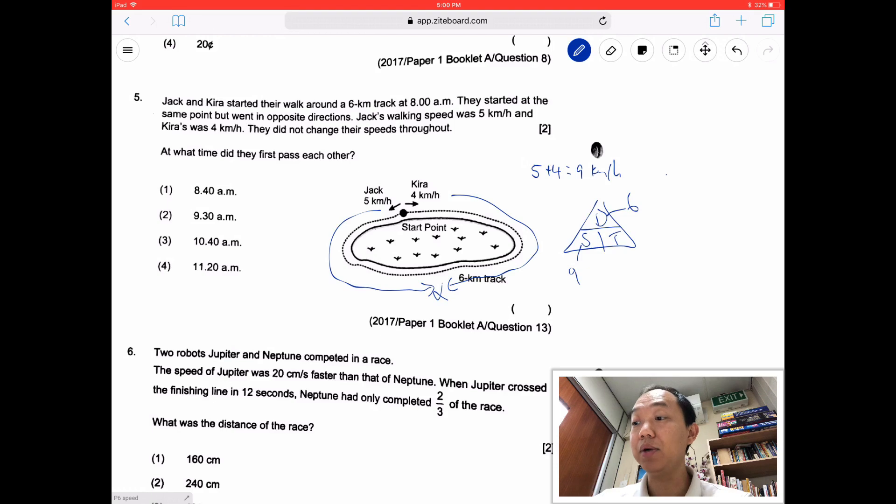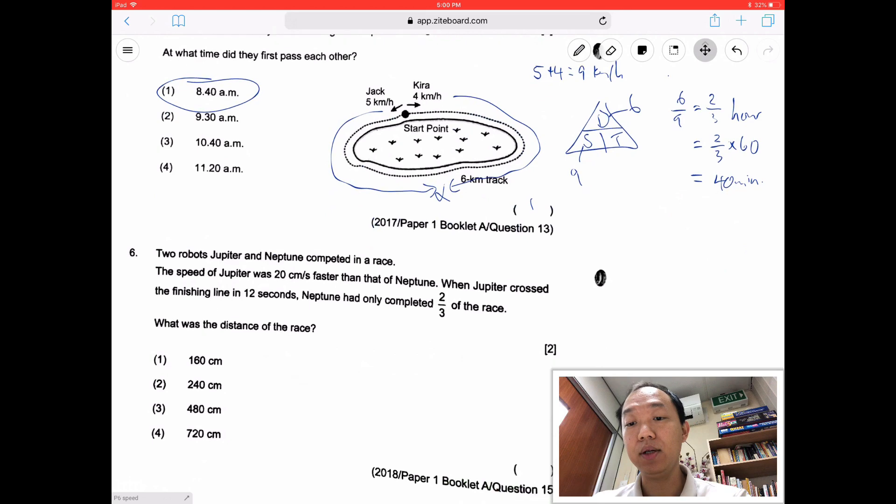So using the DST triangle, distance is 6, speed is 9, I want to find the time. So how do I find the time here? I take distance divided by speed. So 6 over 9, we can't use a calculator. This is divided by 3 is 2/3 of an hour. 2/3 hour times 60 minutes equals 40 minutes. So the time taken for them to meet is 40 minutes. So the answer is 1.